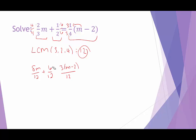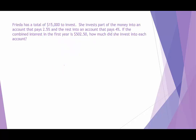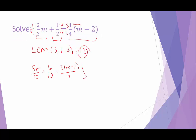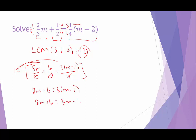Now I can multiply every single term by 12 — using the multiplication property of equality. When I distribute the 12, it cancels out all the denominators, leaving just the numerators: 8m plus 6 equals 3 times (m minus 2). Cleaning up the right-hand side gives us 8m plus 6 equals 3m minus 6.